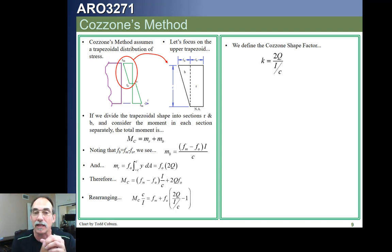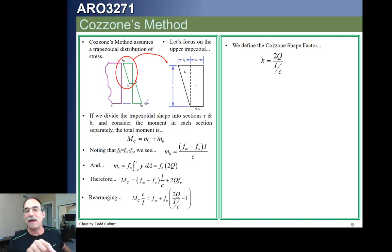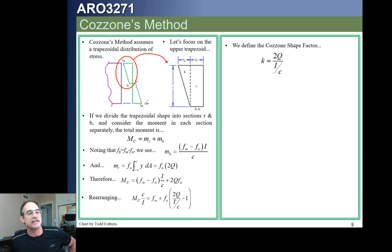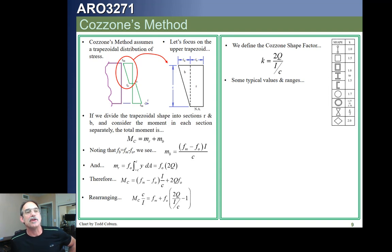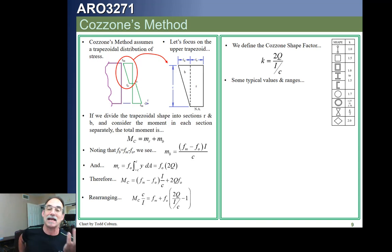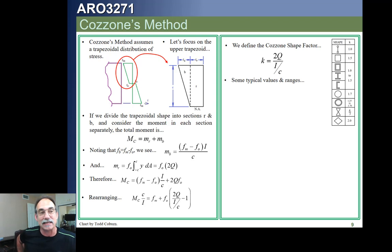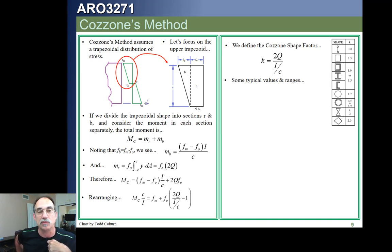We're using a lowercase k here for 2Q over (I/C), and some typical values for k are shown in this table. If we have lumped areas, our factor is 1.0, meaning elastic and plastic analysis give the exact same number. We already saw from elastoplastic analysis that the shape factor for a rectangular section is 1.5, and that's true for Cozzone's method as well.